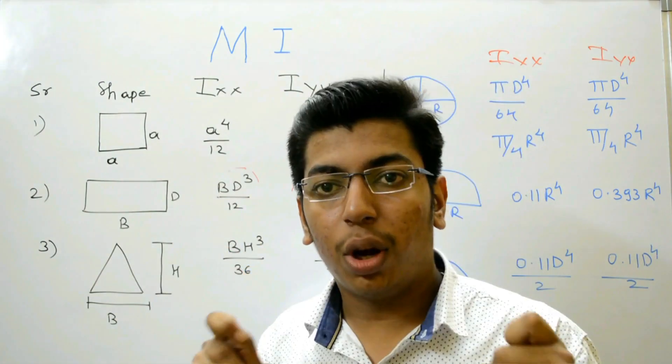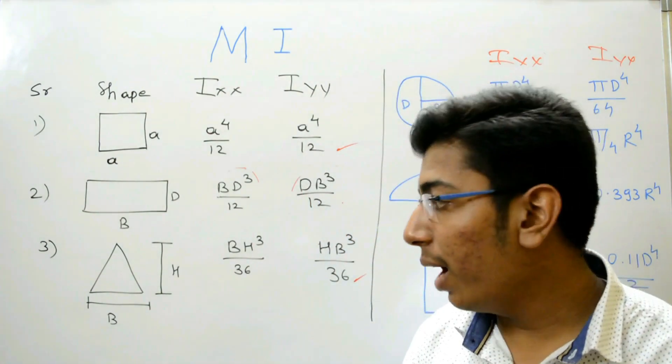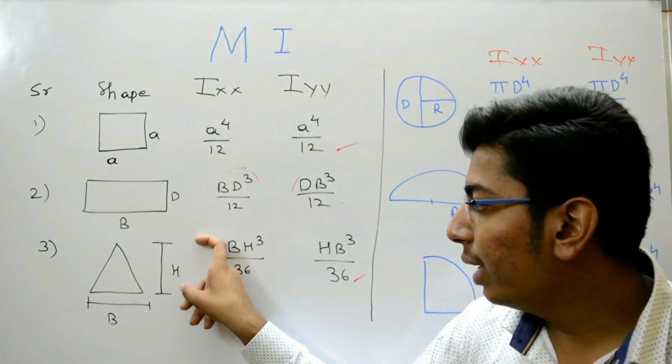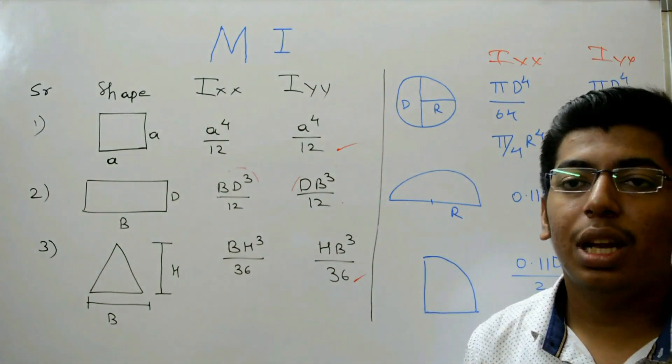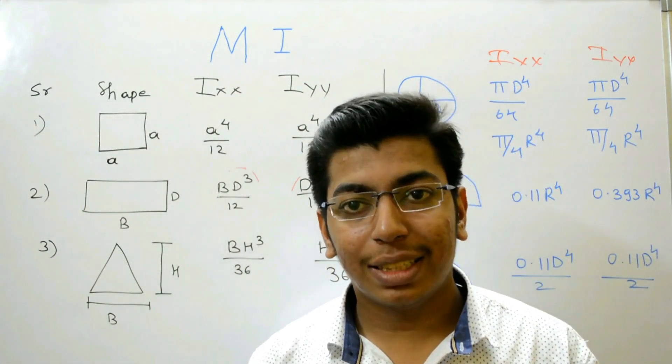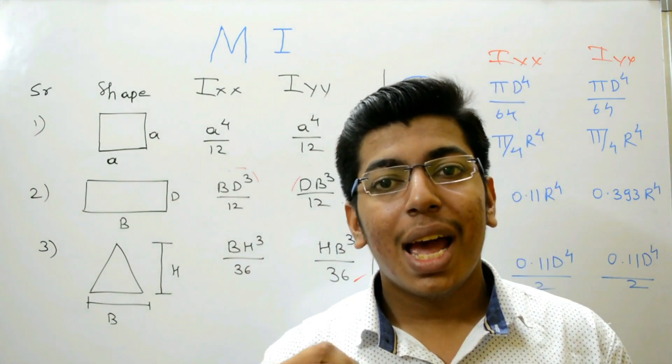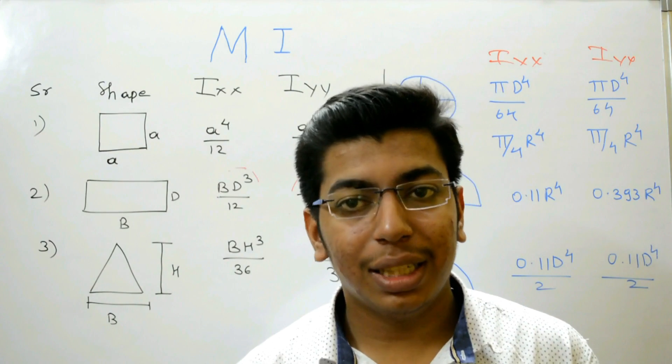So our next shape, having base B and height H. The moment of inertia along x-axis is B H cubed upon 36 and the moment of inertia along y-axis is equal to H B cubed upon 36.